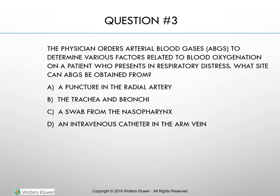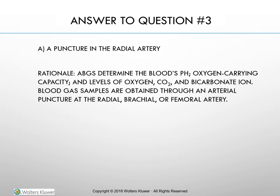Practice question: The physician orders ABGs to determine various factors related to blood oxygenation on a patient in respiratory distress. What site can ABGs be obtained from? A) a puncture in the radial artery, B) the trachea and bronchi, C) a swab from the nasopharynx, or D) an IV catheter in the arm vein. The answer is A — a puncture in the radial artery. ABGs are obtained through an arterial puncture at the radial, brachial, or femoral artery.